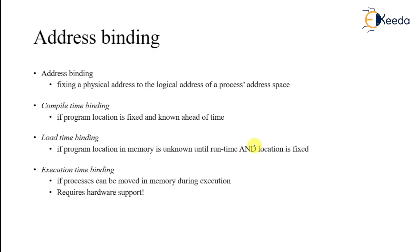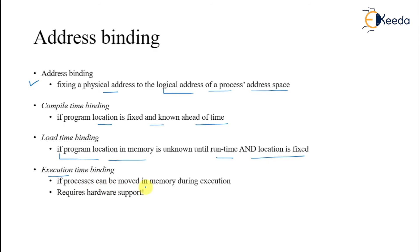What is address binding? Fixing a physical address of a logical address space of a process. Compile time binding is when the program location is fixed and known ahead of time. Load time binding is when the program location in memory is unknown until run time but the location is fixed. And execution time binding is when the process can move in memory during execution, and that requires hardware support. So there are three different kinds of binding. What we are binding here is fixing a physical address to a logical address of the process address space.